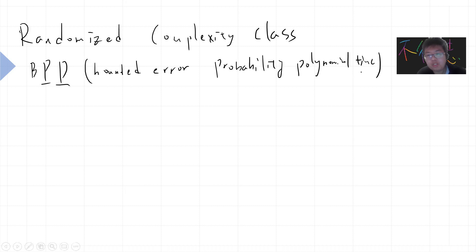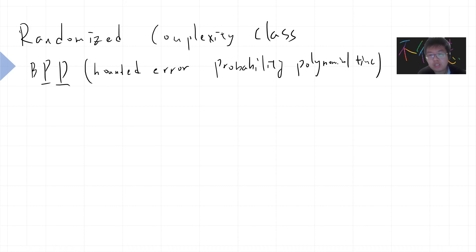Simply speaking, you can imagine you get a regular deterministic Turing machine, but when you write the algorithm you can add randomness — so basically you can flip a coin. This is the definition.